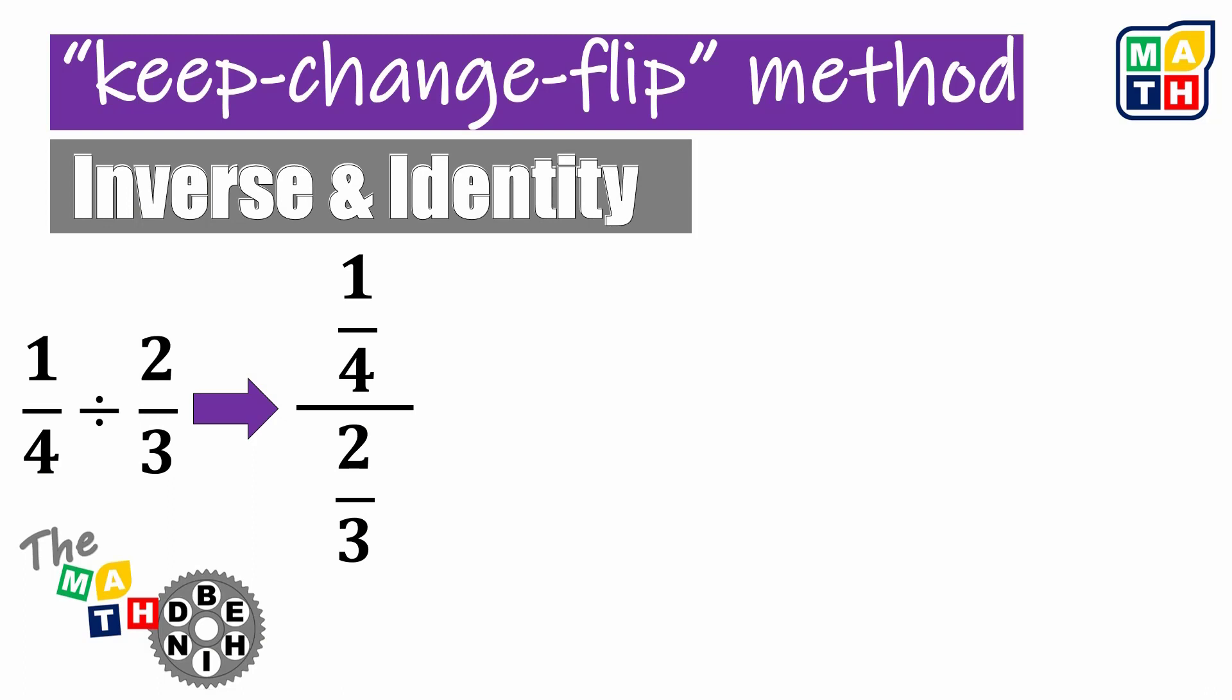We can illustrate the math behind this method when we are going to multiply this expression by another rational expression. The denominator of this new rational expression should be the inverse identity of 2 thirds. When you say inverse, it's the reciprocal of it, which is actually 3 halves.